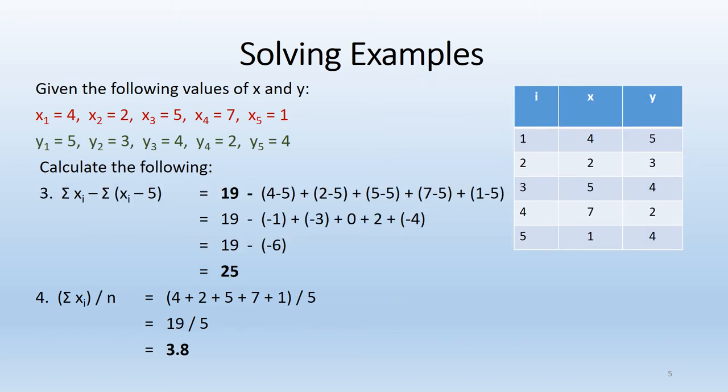For these next two examples, three and four, we're just adding a little bit more sophistication. In number three, the extra layer of complexity is that sigma sign shows up twice. You need to make sure you do the first sigma, which is just add up all the x values, get an answer, hold on to it, and then do the second sigma, which is the x minus five, get an answer, and then merge them together to get that total of 25.